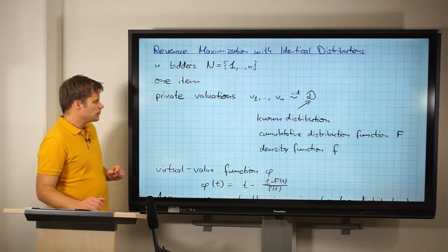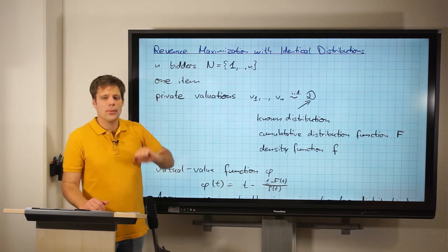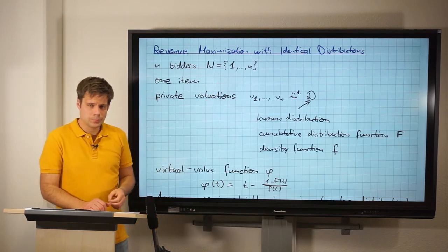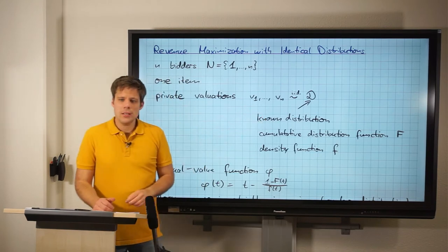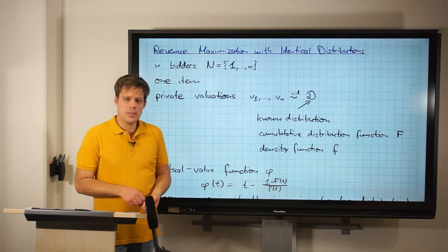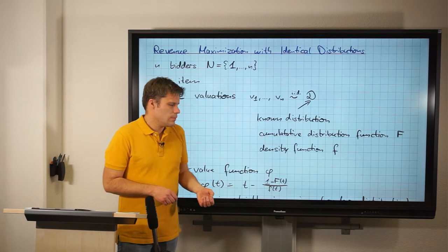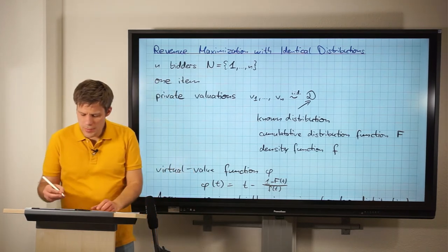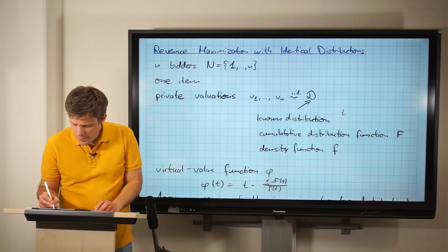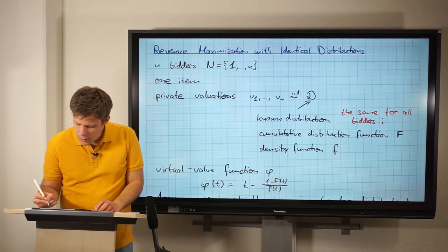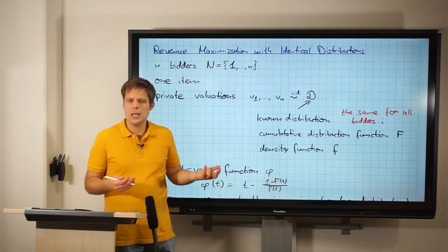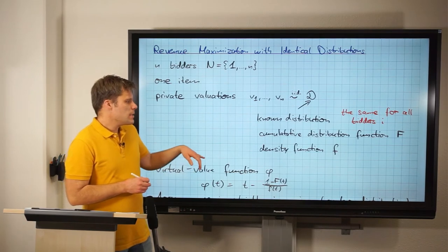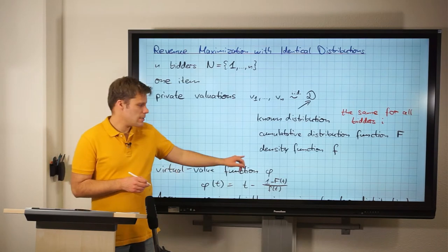Let's first recap the setting. We have N bidders, which we call the set capital N, numbered 1 through N. We have one item, and private valuations V1 through VN drawn from a known distribution. Today we assume this distribution is the same for all bidders i, so we drop the subscript and call it simply D. We assume it has CDF capital F and density function small f.